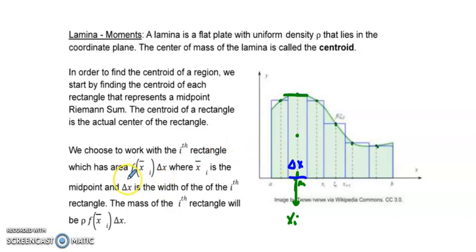So the area of that rectangle is going to be this. And note that we put an x bar sub i, where x bar sub i is the midpoint, delta x is the width, all of this ith rectangle.